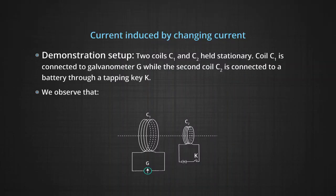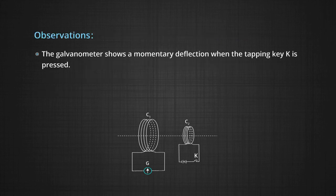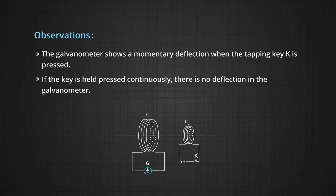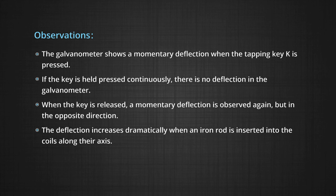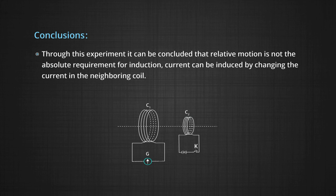Experiment 3 involves no relative motion. Two coils C1 and C2 are held stationary. Coil C1 is connected to galvanometer G, while coil C2 is connected to a battery through a tapping key K. We observe that the galvanometer shows a momentary deflection when the tapping key K is pressed. If the key is held pressed continuously, there is no deflection. When the key is released, a momentary deflection is observed again but in the opposite direction. The deflection increases dramatically when an iron rod is inserted into the coils along their axis. This experiment concludes that relative motion is not the absolute requirement for induction; current can be induced by changing the current in the neighboring coil.